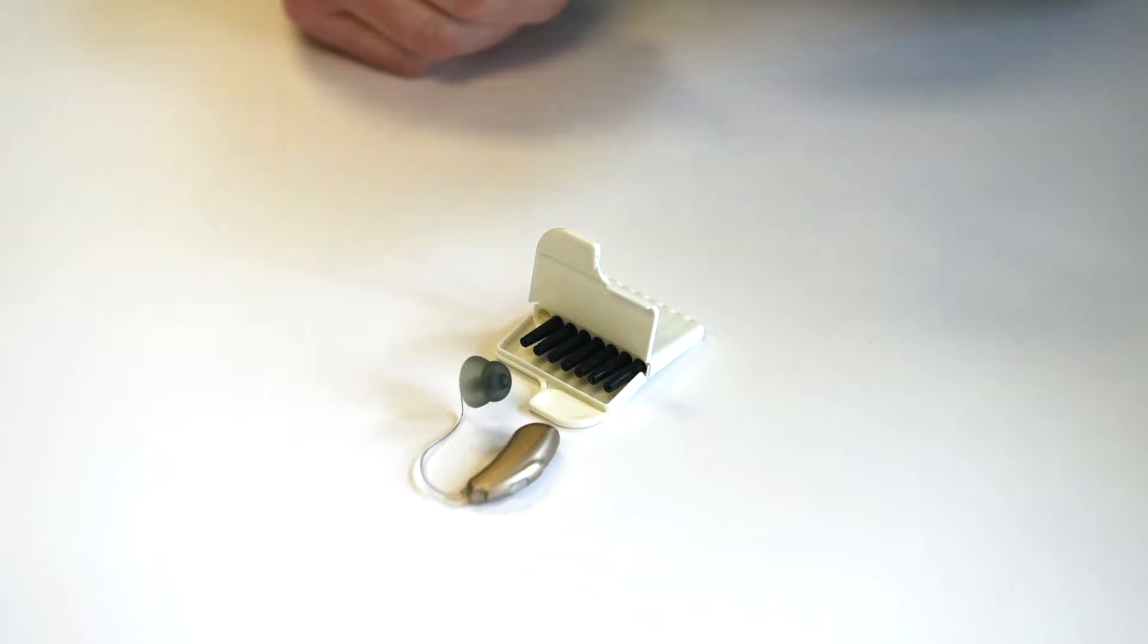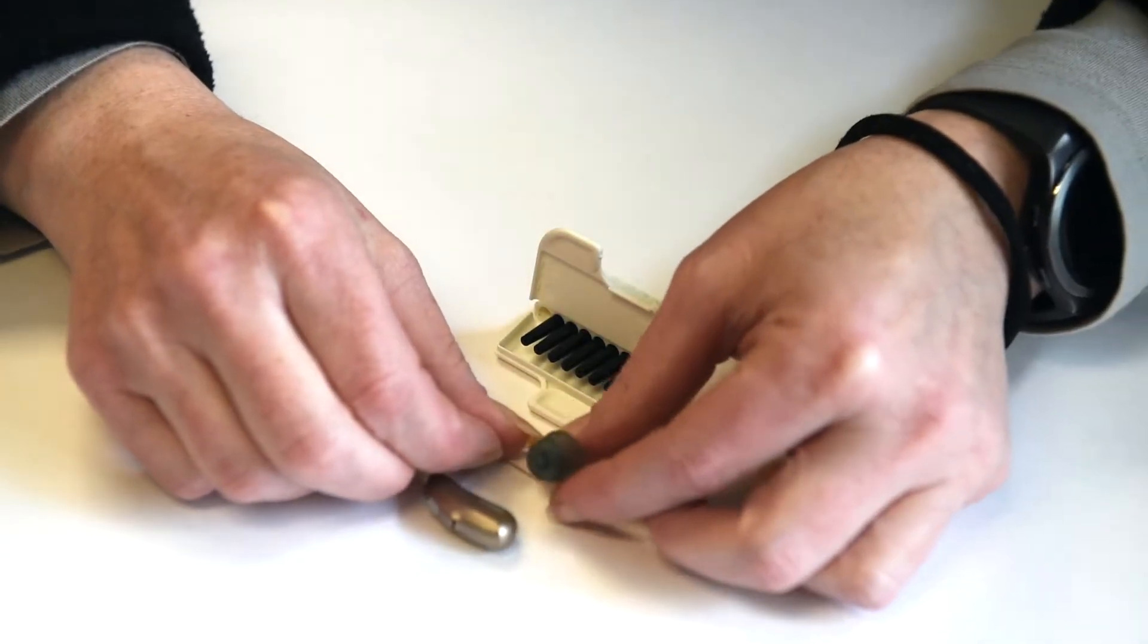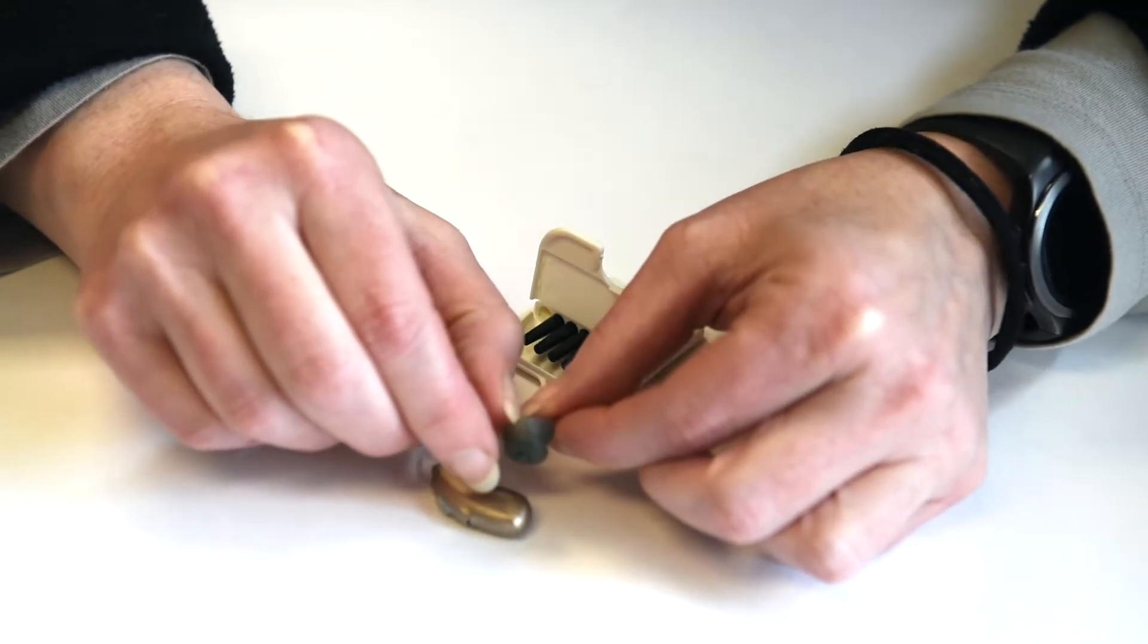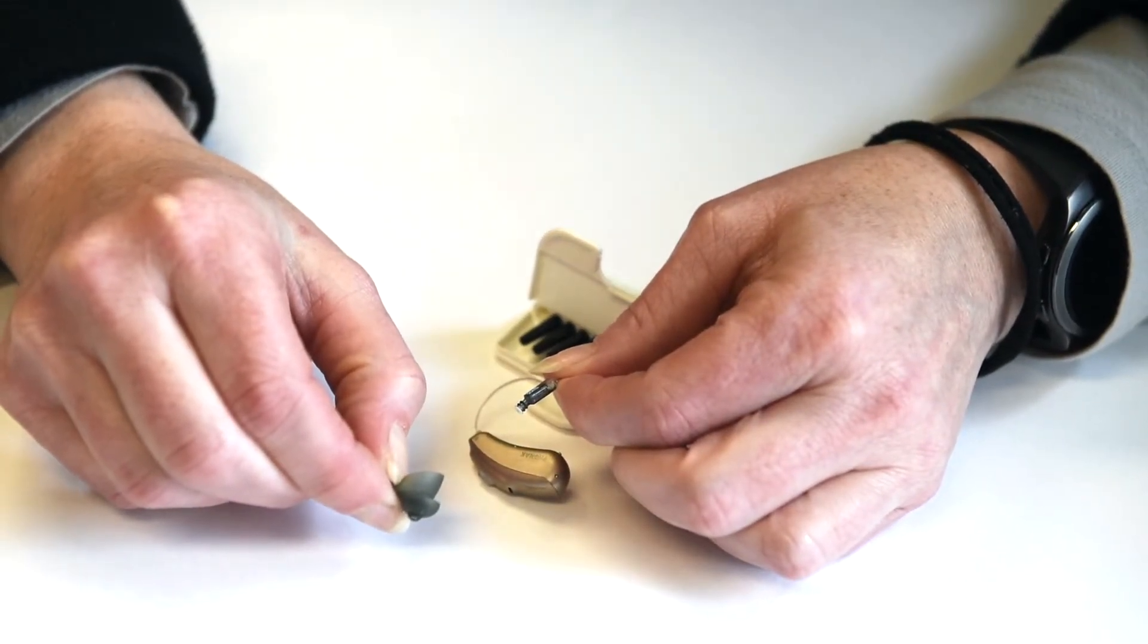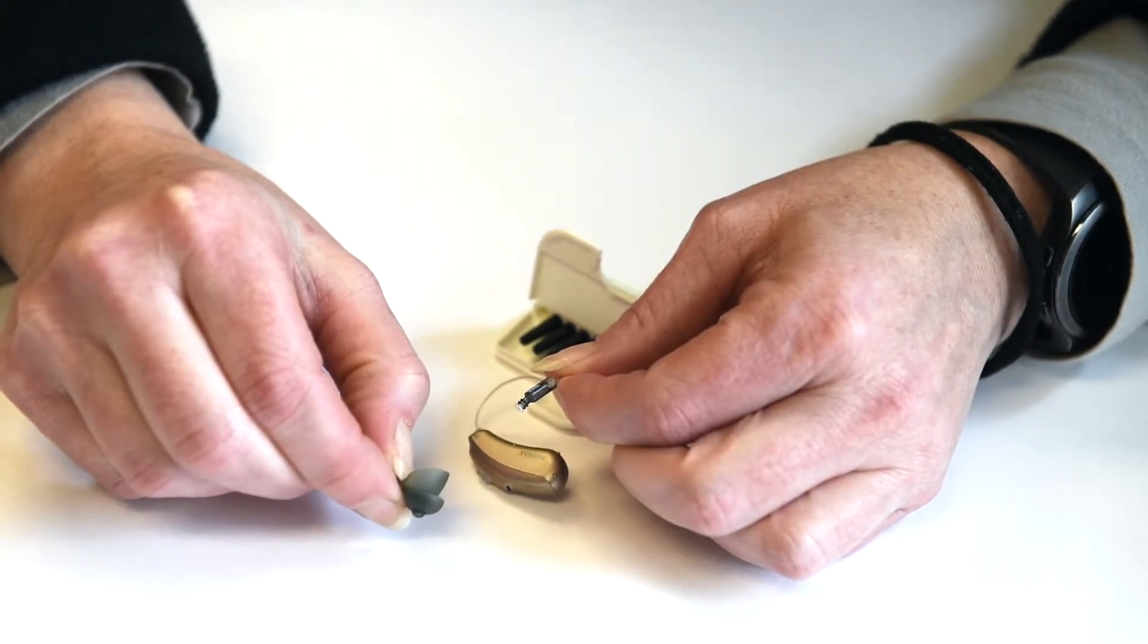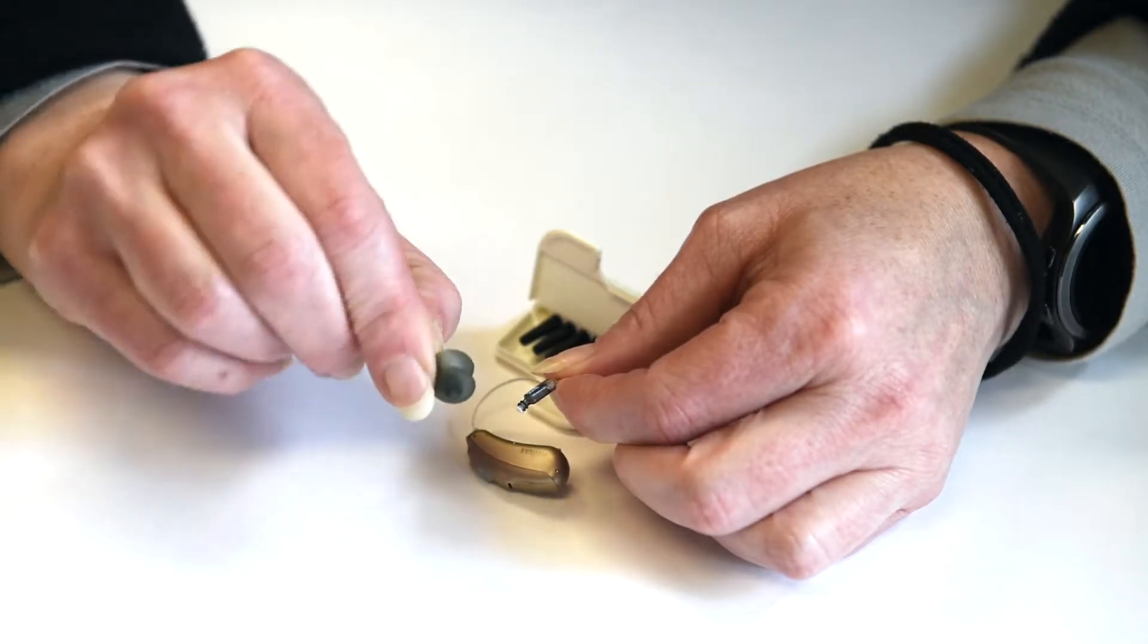The first thing we need to do is pull the rubber tip off of the end. Now your dome might look a little different, that's fine, either way just pull it off. Regardless of what your dome looks like, just pull it off.